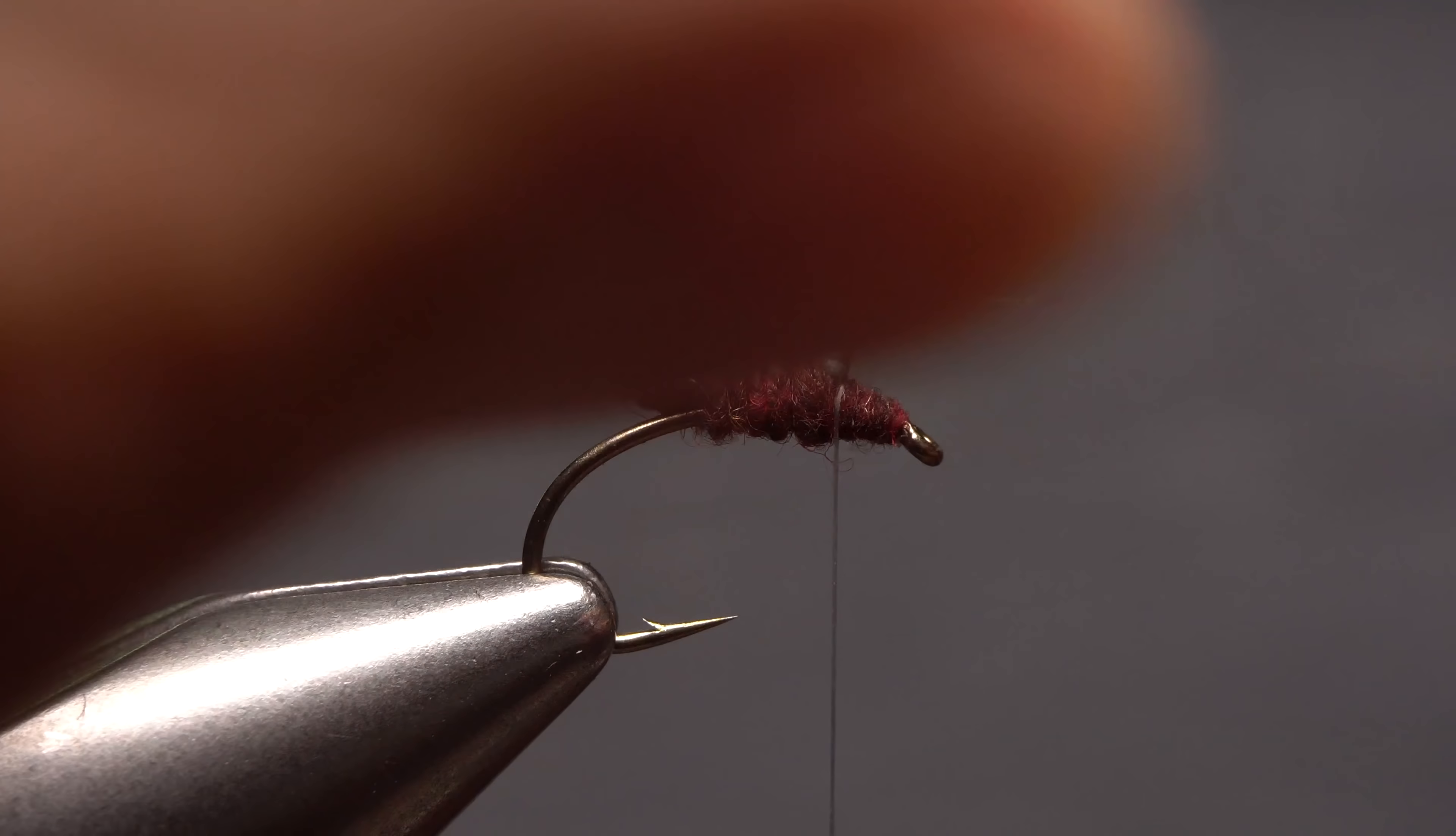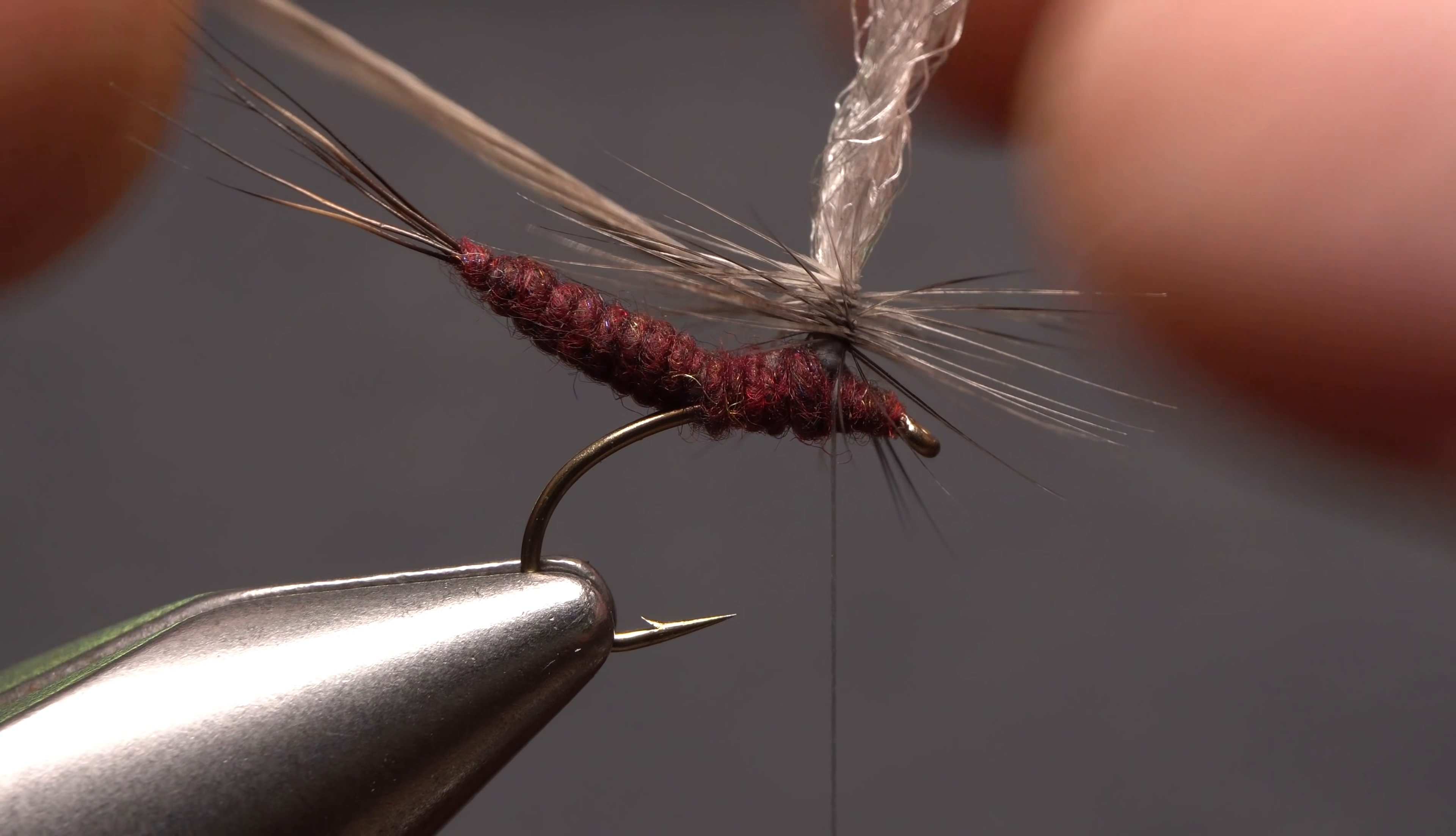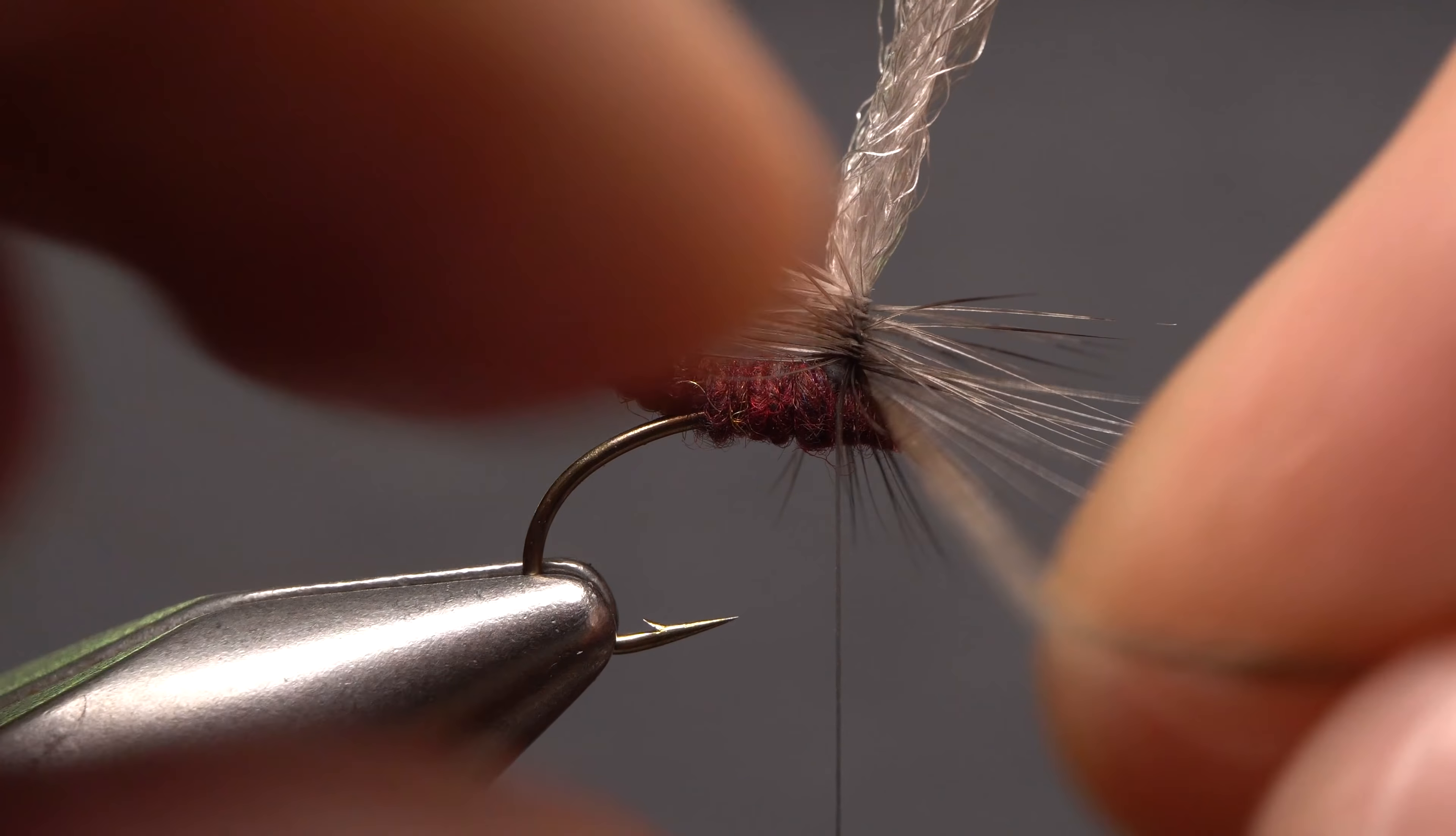Pull the hackle feather down to lightly crease its stem, then take touching clockwise wraps down the post ending at its base. Six or seven turns are generally plenty.